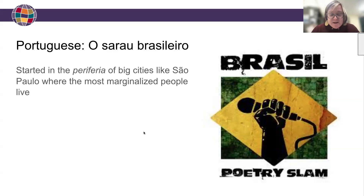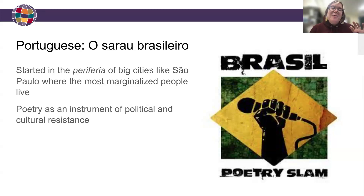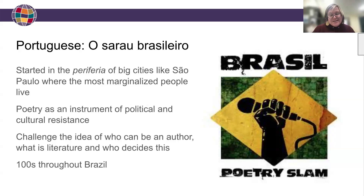O sarao started in the periferia — the outskirts of big cities like São Paulo — where traditionally the most marginalized people live. This is poetry used as an instrument of political and cultural resistance, with themes addressing racism, violence, misogyny, homophobia, and poverty. These poetry slams challenge the idea of who can be an author, what is literature, and who decides this — challenging dominant culture ideas. There are now hundreds of saraos throughout Brazil, with all ages participating.